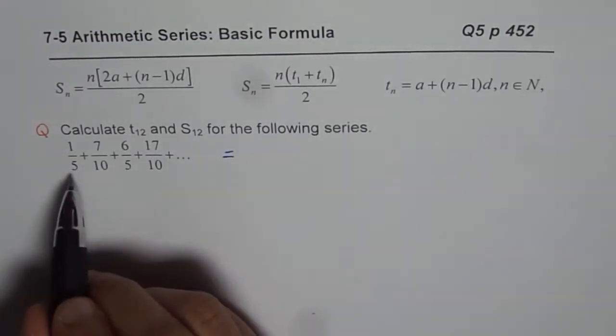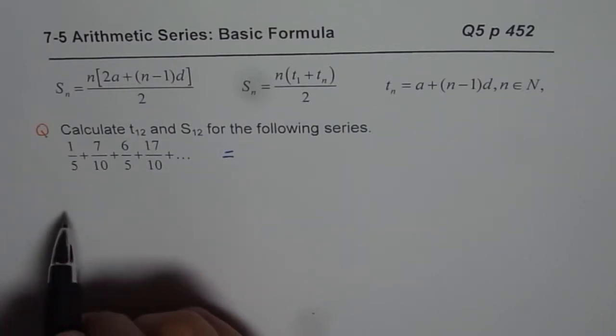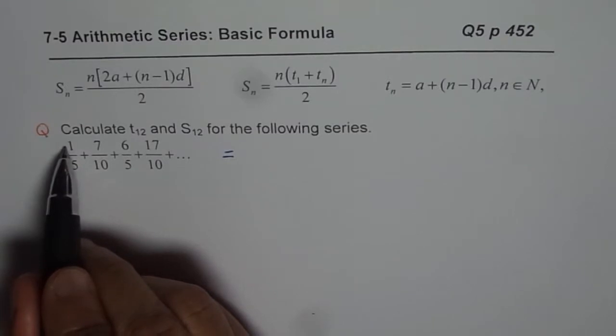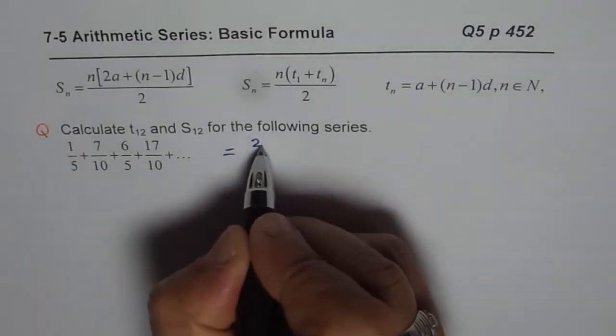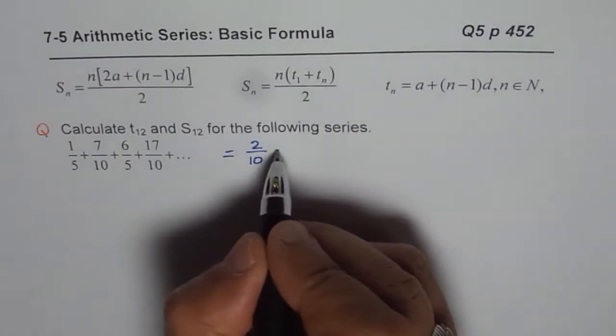Let me write this series again. Instead of having 5 as the denominator, let me write each term with 10 as denominator. If I want to write 10 in the denominator, I'll multiply both numerator and denominator by 2. So for this term I'll have 2 over 10. 2 over 10 is same as 1 over 5.